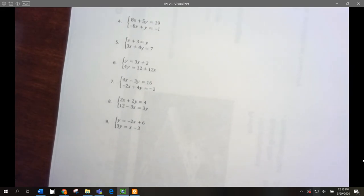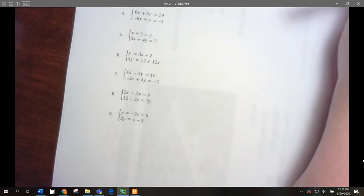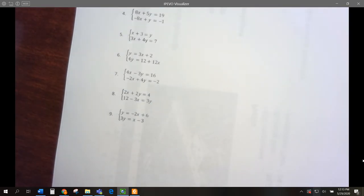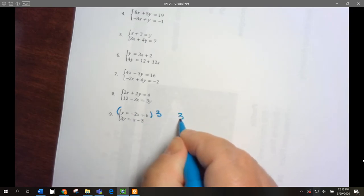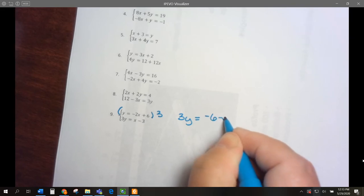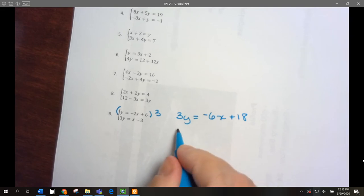Let's go on to 9. We're going to use substitution here. First, I have a 3y and a y here, but I don't want to divide by 3 because we get a fraction. So let's multiply this one by 3 so they equal out. I'm going to multiply this by 3, and we get 3y equals negative 6x plus 18 because I multiplied everything by 3. And this is 3y equals x minus 3.